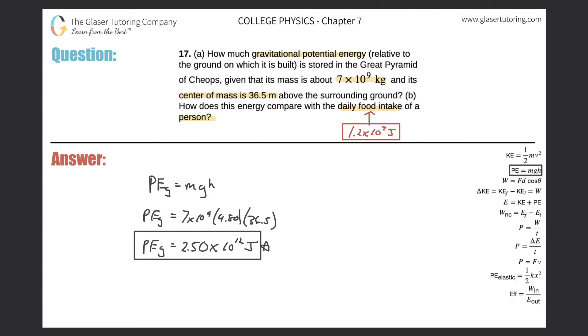So since I'm comparing this number to this number, I will divide this value by this value. Okay, so let's set that up. So it's simply going to be 2.50 times 10 to the 12th all divided by 1.2 times 10 to the 7th. Okay, they're both in joules so they're going to cancel.